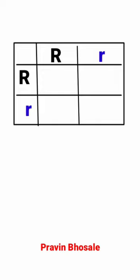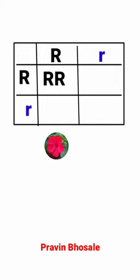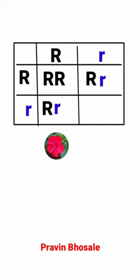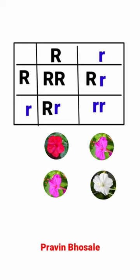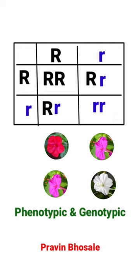On selfing the F1, we get capital R capital R (red flower), capital R small r (pink flower), and small r small r (white flower). The phenotypic and genotypic ratio will be 1:2:1.